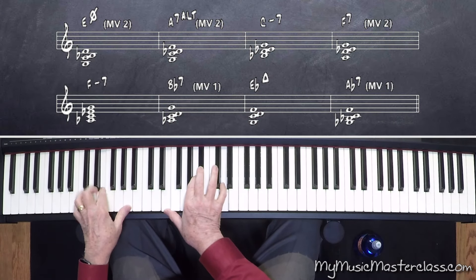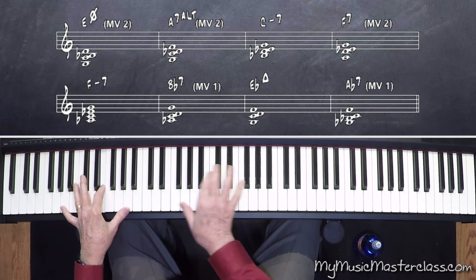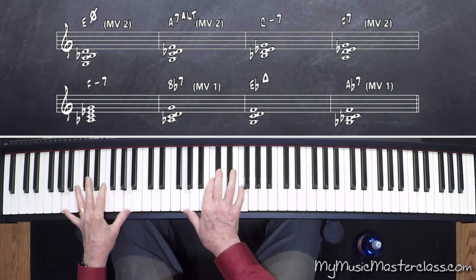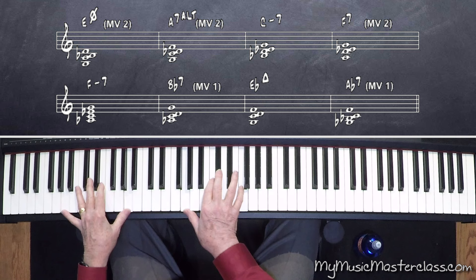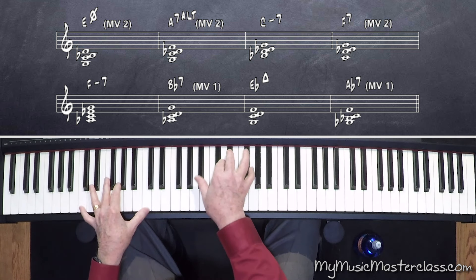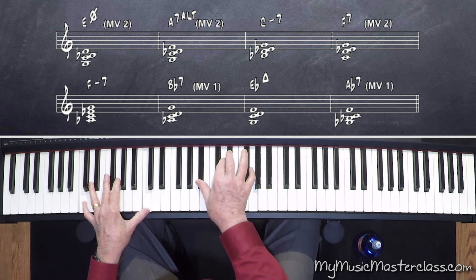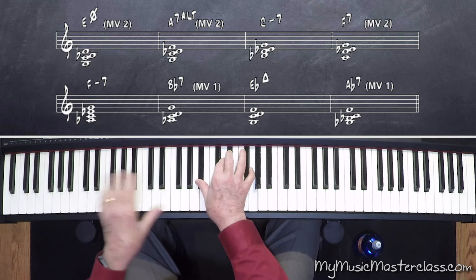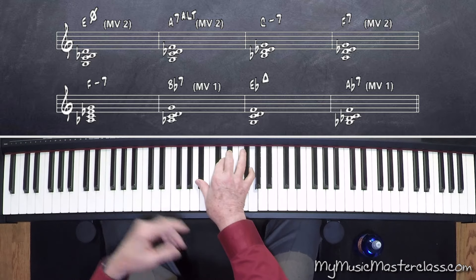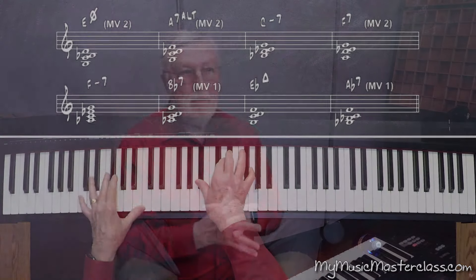Half diminished — voicing 2. Now on this minor chord, I want a minor 7 because it's a 2 function. It's going to resolve to a 5 chord.